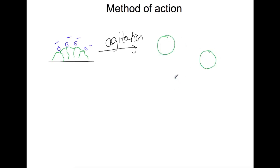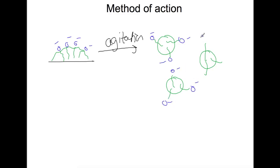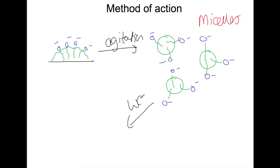This forms small balls of grease which have the non-polar tails stuck inside them and on the outside they have the polar heads. Now these polar heads are all negative, so they repel away from each other so that the little balls of grease can no longer stick back together. We call these things that we've formed here micelles. We can now wash these away with water, because the negative charges on the outside are soluble in water, so we can just wash away these little parts of grease.